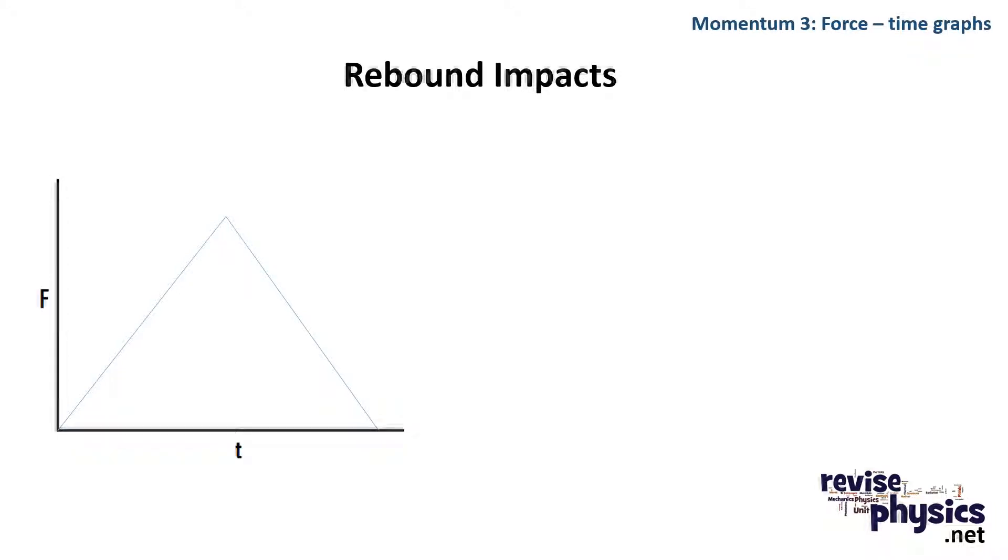And this is what the force time graph looks like for a rebound. This first half here is as it hits. So that part there basically represents mv, because it will slow down to 0. As it bounces off, the force decreases. This is as it heads away. And the momentum here is also, in terms of magnitude at least, mv. So the area underneath the graph here is giving us the change in momentum, or two times its initial momentum.